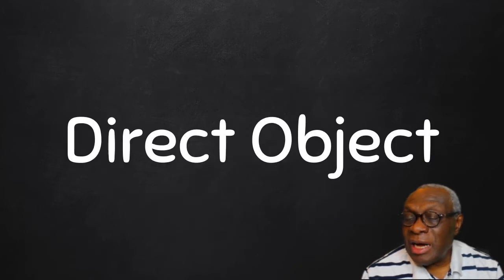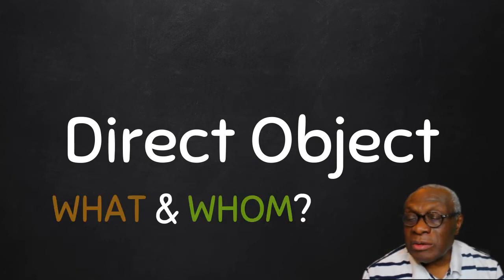We have two lessons in which we saw the direct object. And as a reminder, in order to know we have a direct object, we need to ask one of these two questions: What and whom?